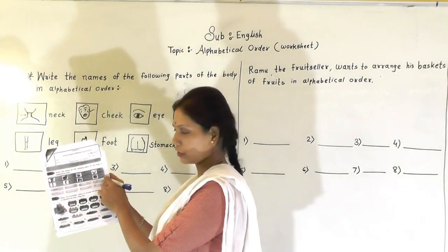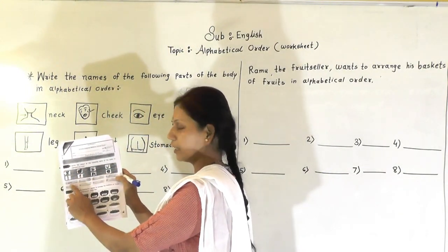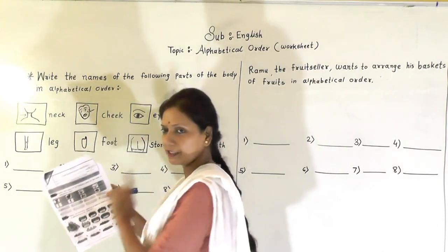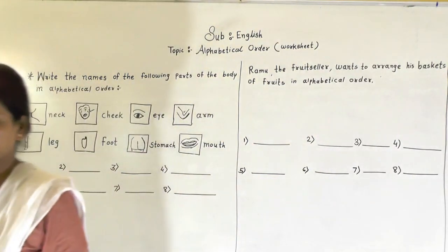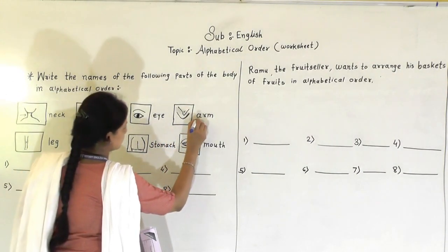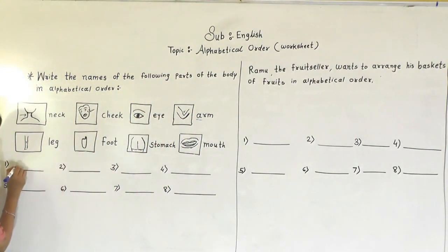So this is your worksheet page. Here you have to write the first letter. It was given already but I am writing again. So A is the first letter. So here you write down A-R-M. Arm. Okay.